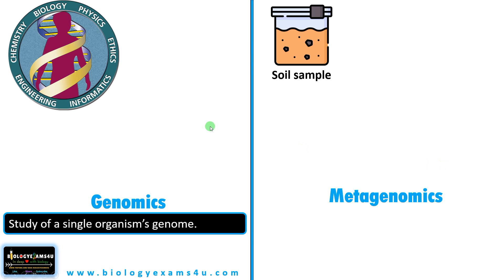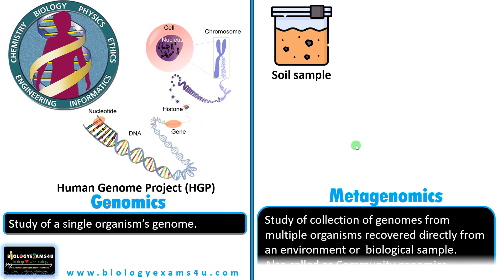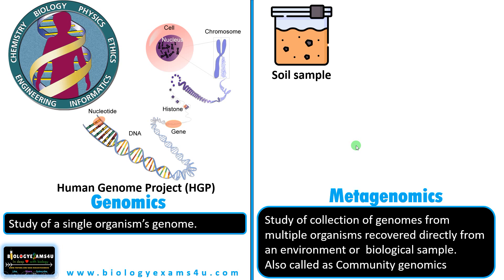Genomics is the study of a single organism's genome. An example is the Human Genome Project, where we study the genes of human beings. Metagenomics, on the other hand, is the study of a collection of genomes from multiple organisms recovered directly from an environment or biological sample.